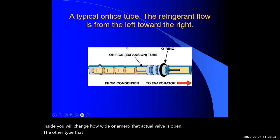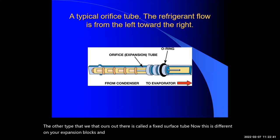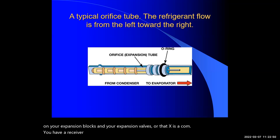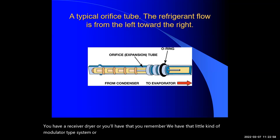The expansion block is spring-loaded with a diaphragm. When it reaches a certain temperature, it senses the temperature inside and changes how wide or narrow the actual valve is open. The other type out there is called a fixed orifice tube, which is different from expansion blocks and expansion valves — also called TXVs. With TXVs, you have a receiver dryer or a desiccant bag built inside the condenser.